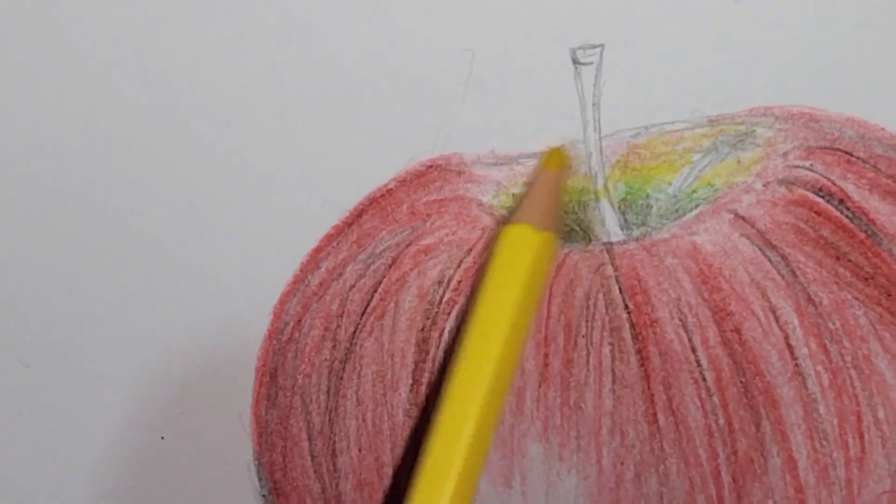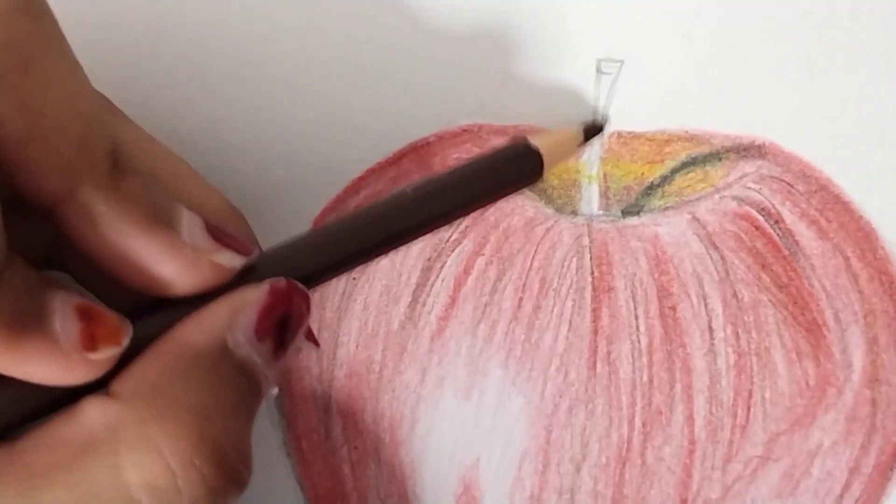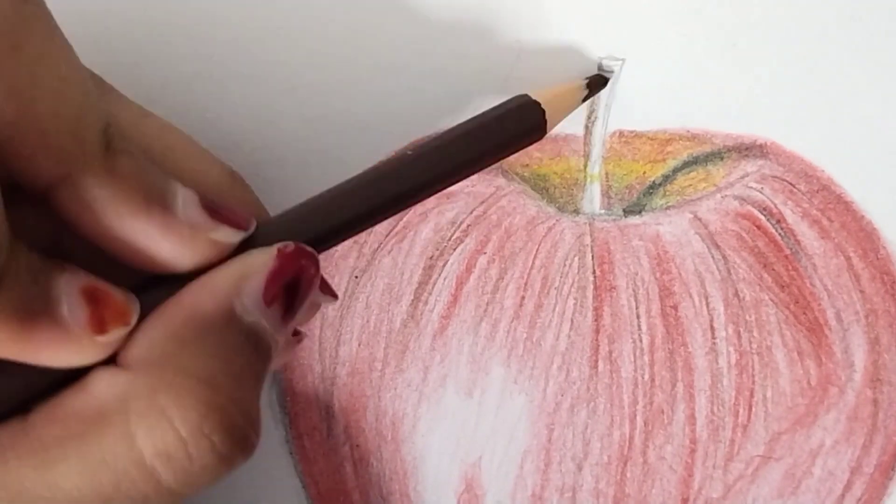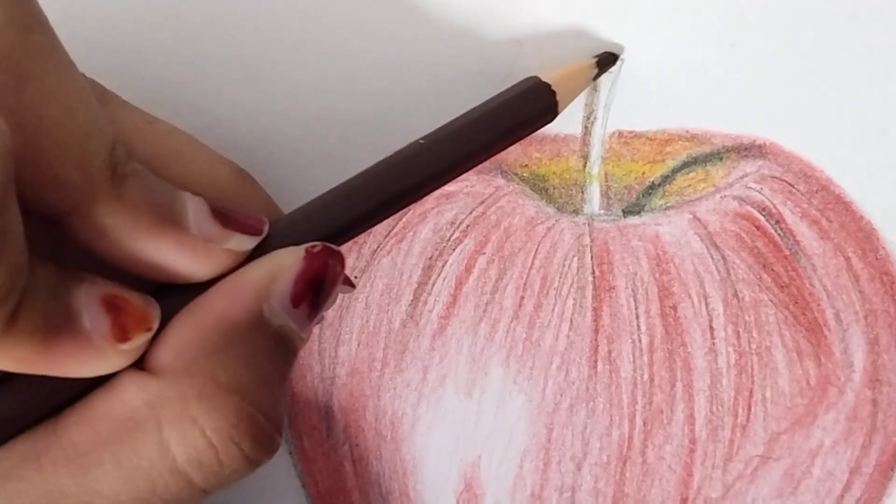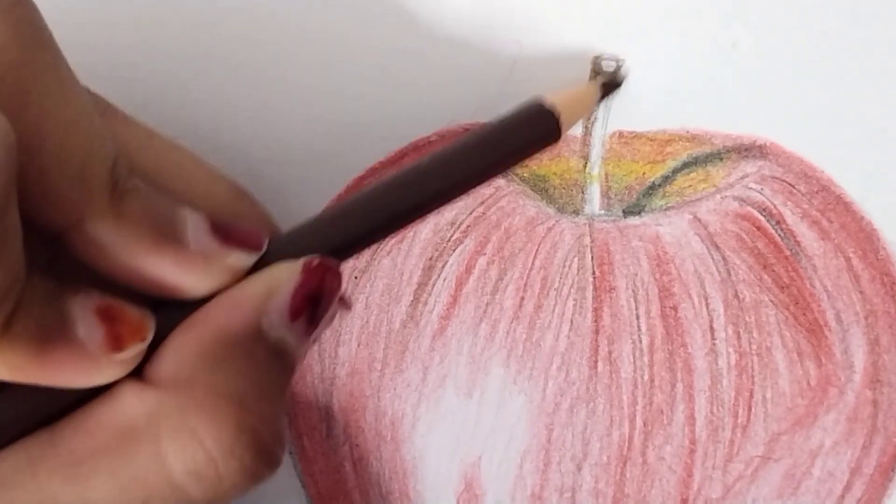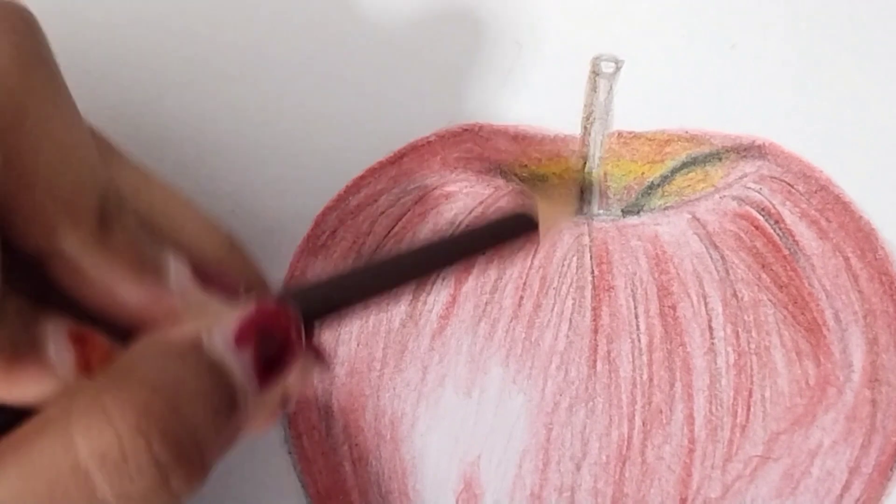Now, as you can see, I've also added this shadow of the stem, and I'm going to be doing my stem with dark brown. So if you want to give it a realistic touch, make sure you're adding the stem. Otherwise, there's really no need. It's all up to you.